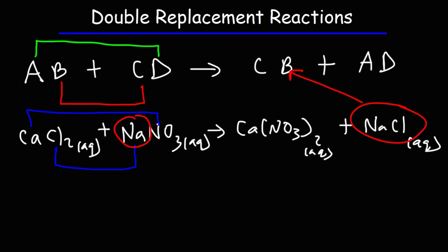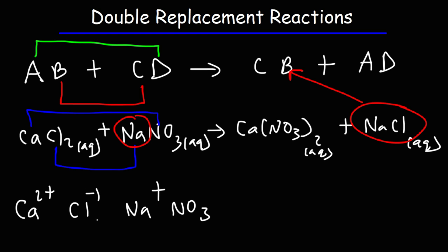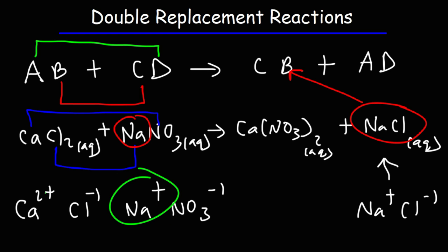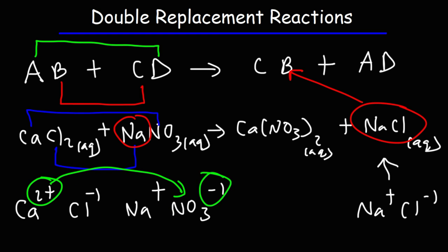Notice that positive ions are written first — sodium is written before chloride because it has the positive charge. Calcium doesn't pair up with sodium because like charges repel. That's why calcium pairs up with nitrate — they have opposite charges. Calcium has a 2+ charge; nitrate has a −1 charge. Ions with opposite charges attract each other. That's why sodium is attracted to chloride. So you shouldn't see calcium paired with sodium or chloride paired with nitrate.